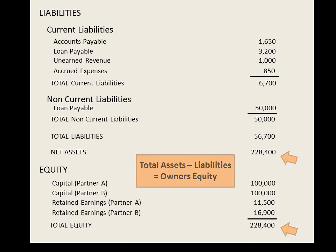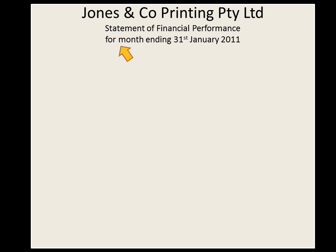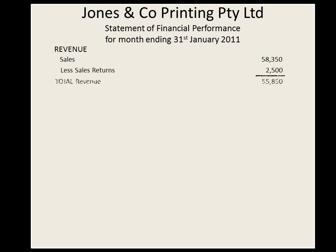Now let's move on to the statement of financial performance. As mentioned earlier, this statement is also known as the income statement or profit and loss statement. Notice here that the statement is for the month ending 31st of January. This is because it contains all activities that have occurred in this specific time period, in this case a month. So what goes on this statement? First we have revenue — in this case, sales. For a service type business, we would have fees. Then we have sales returns to give total revenue.